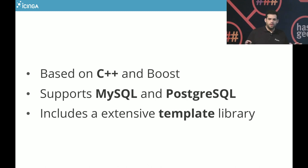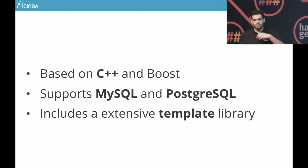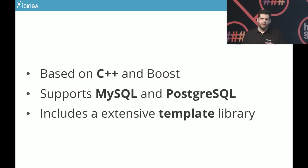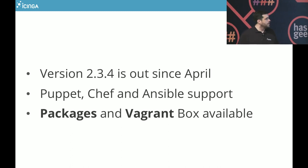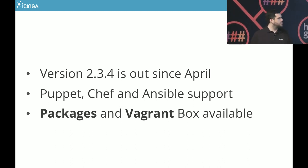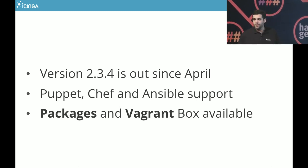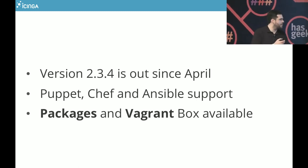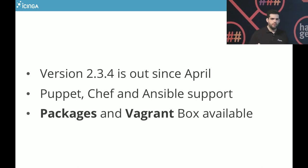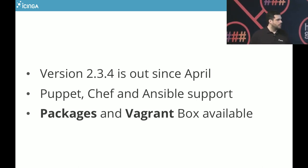For all the basic checks, we have a lot of plugins and a template library shipped with Icinga — all the standard things like disk, load — everything is pre-configured, you just use it without thinking about how to configure the monitoring command. The current version is 2.3.4, out since April. We have modules for Puppet, Chef, Ansible, and we're working on SaltStack support. We also have Vagrant boxes where you can spin up a machine with all the Graphite stuff — easy to try out.